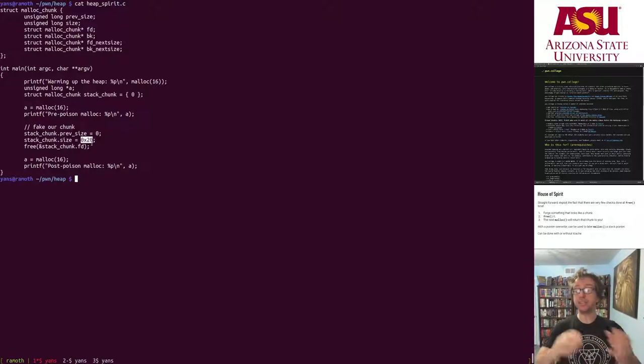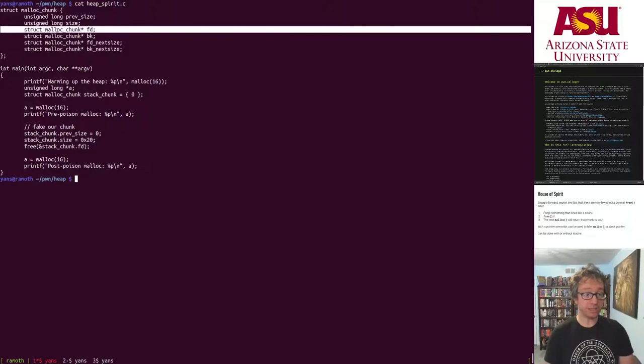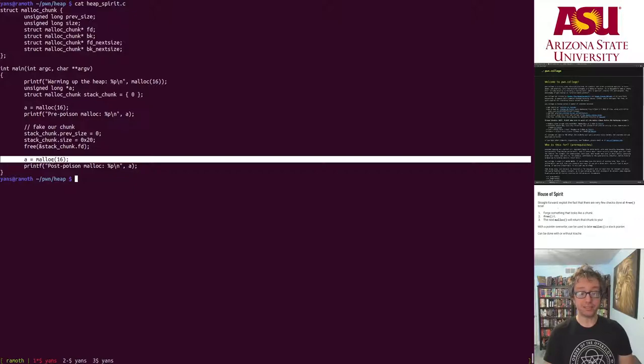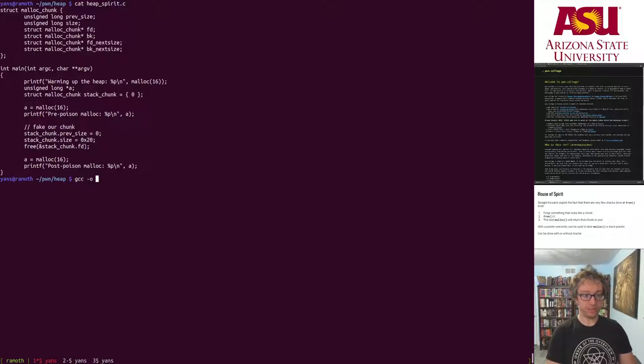We basically say that there is a, we create a chunk with a size of hex 20. That is of course an allocation of 16 plus 16 more for the metadata results in a chunk size of hex 20. And then we free it and we free it at this address. If you recall, the chunk is two keywords before your memory location. So we need to free this memory location. And then the next time we malloc, we get our chunk back. So let's compile that.